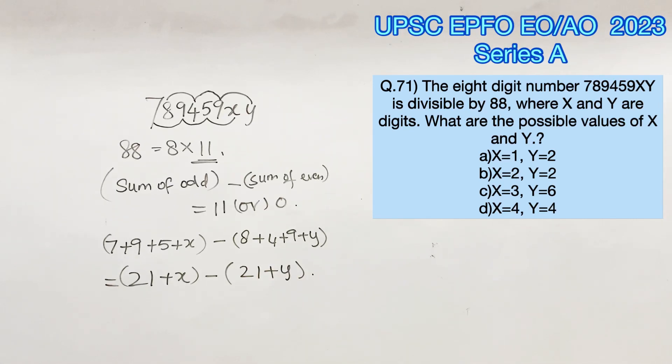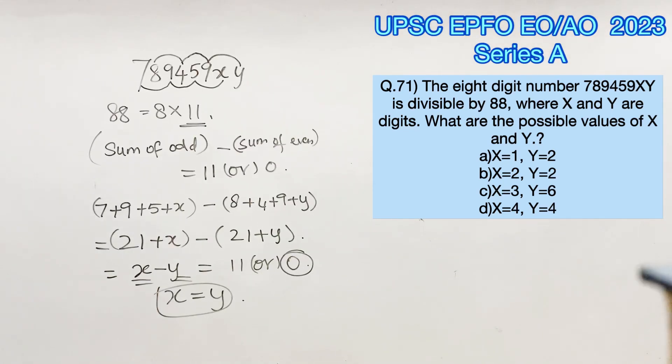Clearing these brackets, we will get x minus y equals 11 or 0. We know that x and y are single digits, therefore 11 cannot be possible. So x minus y should definitely give us 0, which means x and y should be equal.